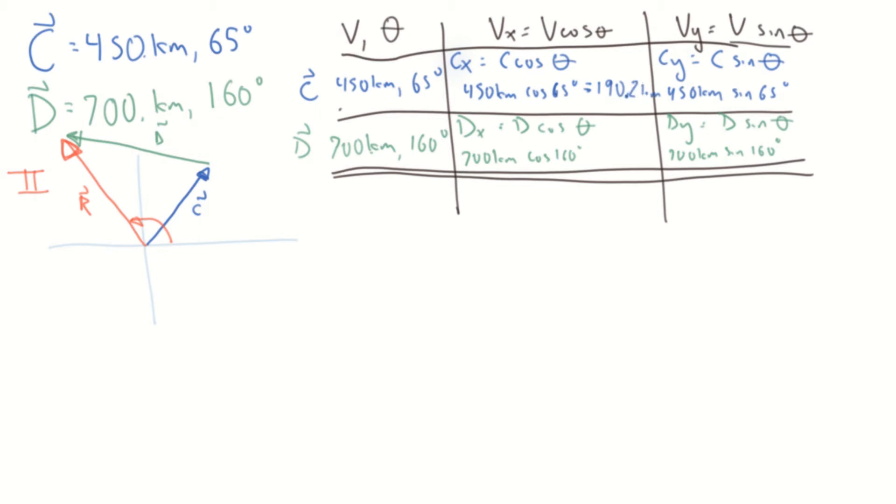That makes sense, given the length of 450, the x component probably makes sense. Next up, we're going to take 450 times the sine of 65. We expect this also to be positive and a little bigger, and it is. So this value here is 407.8 kilometers.